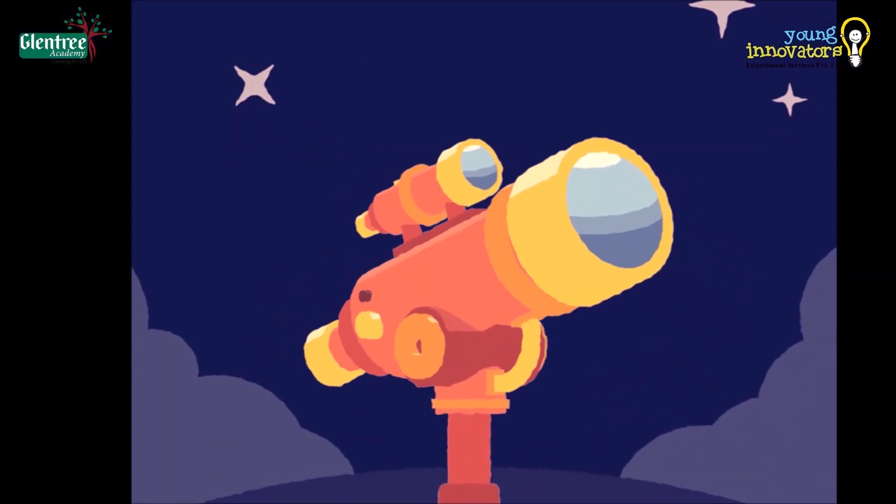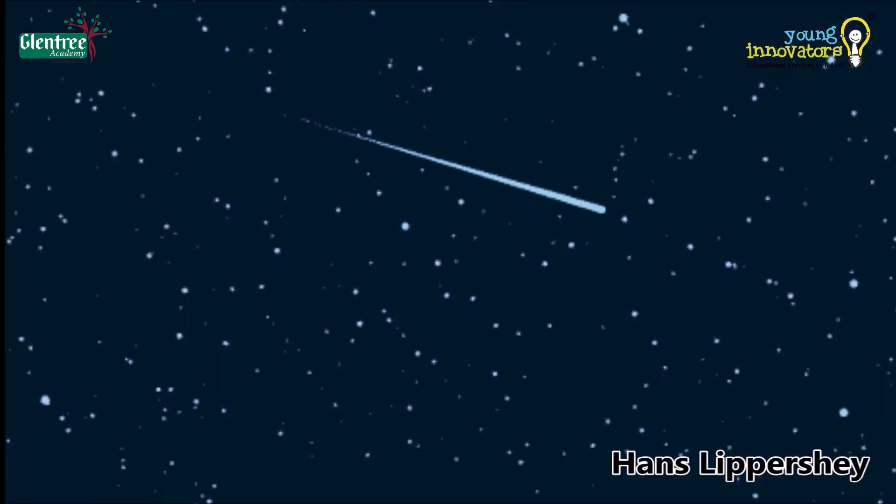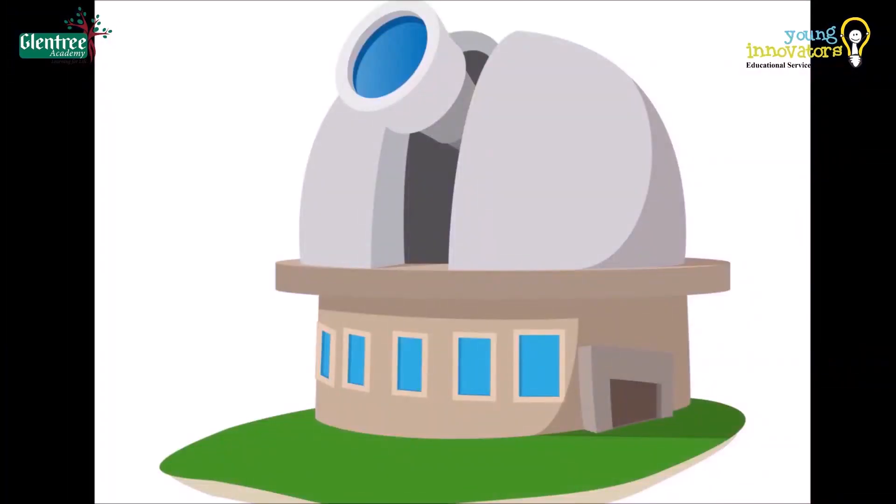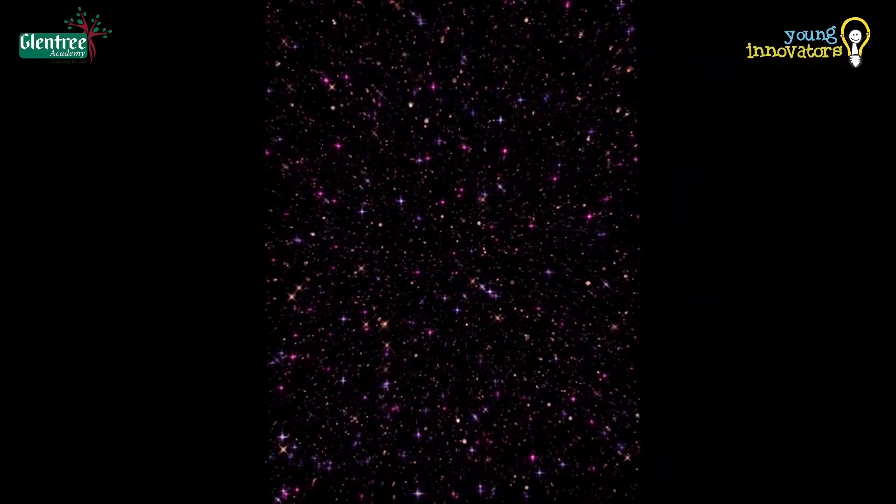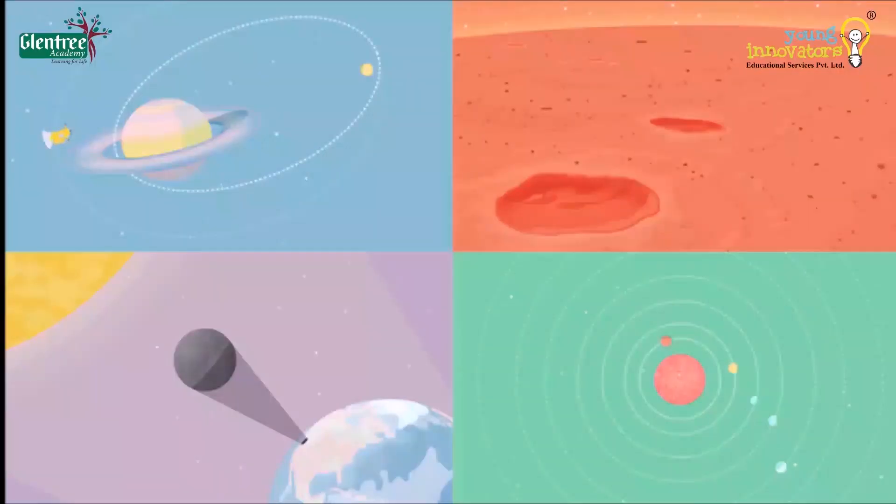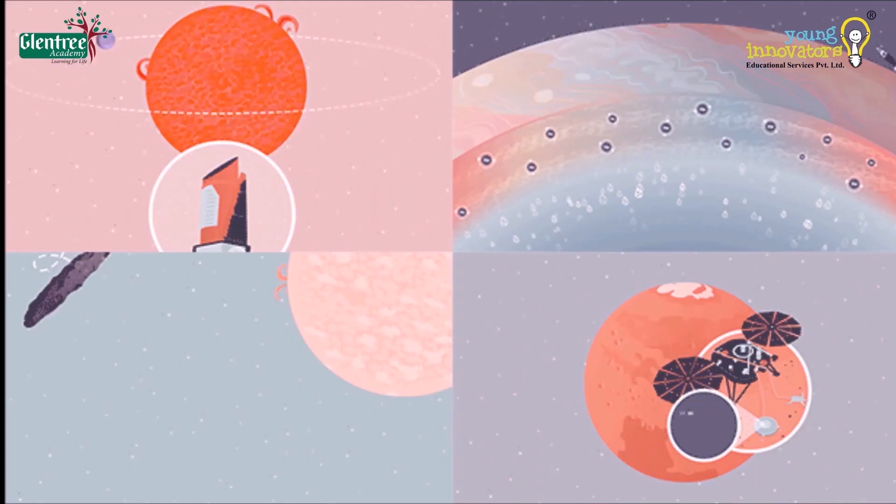The telescope invented by Hans Lippershey changed how people could see the heavens above. Today, we have much larger telescopes which help us see and observe the stars which are millions of kilometers far away from us and we believe that there could be many Earth-like planets going around the stars in the sky.